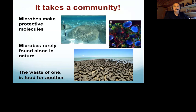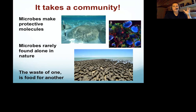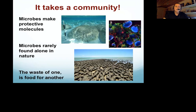The big take-home messages from all these molecular tools are three: first, microbes make protective molecules, which are important for stromatolite formation. Second, microbes are rarely found alone in nature — community structures are essential for stromatolite formation. And third, it's not just photosynthesis — there are other metabolisms, and the waste of one is food for another. These lessons apply to ecology across the board, not just stromatolites.